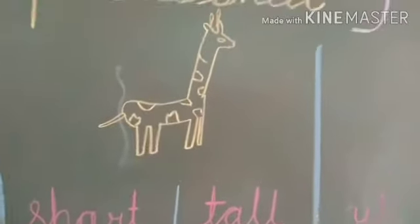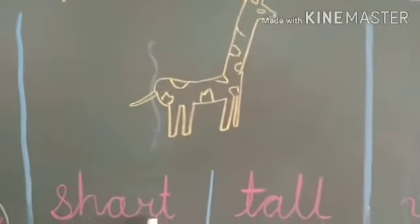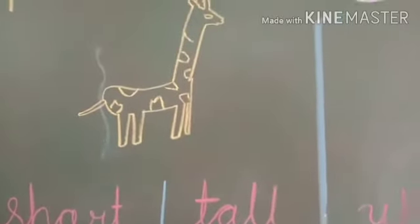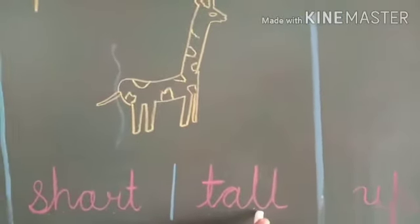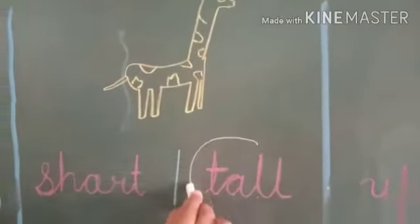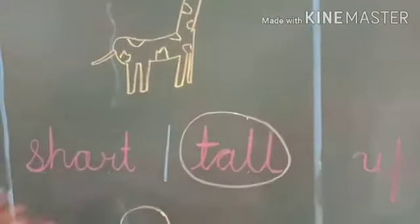Giraffe, spelling here: S-H-O-R-T, short, short means chota. And T-A-L-L, tall means lamba. Giraffe is a tall animal. So circle on T-A-L-L, tall.